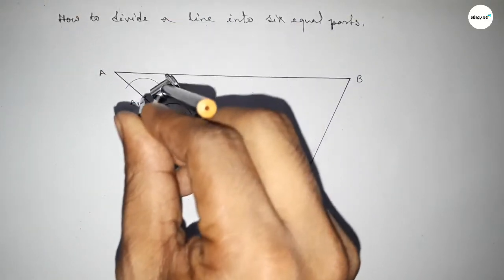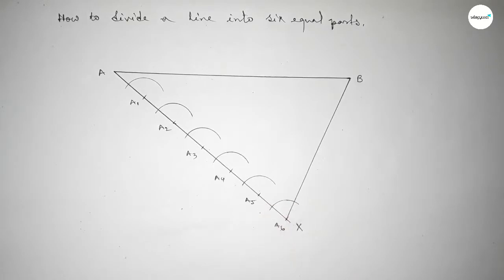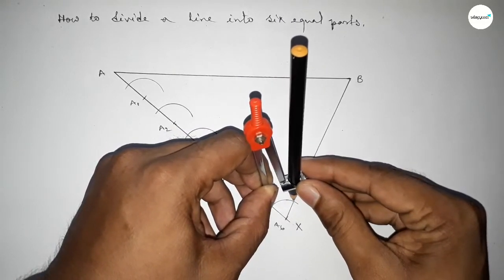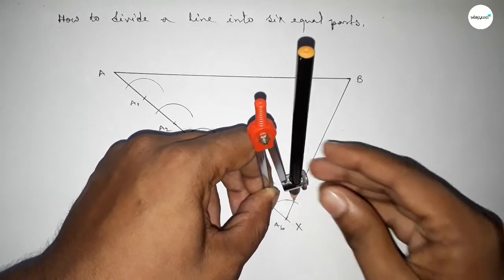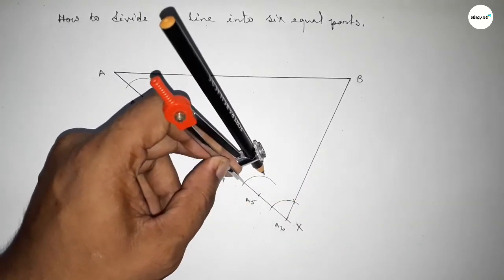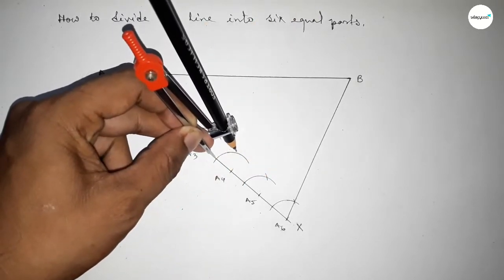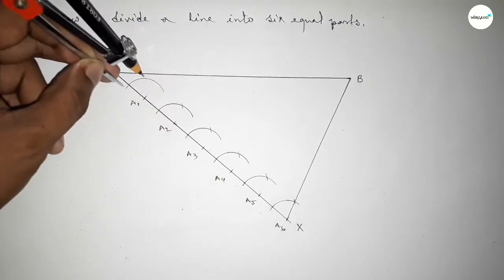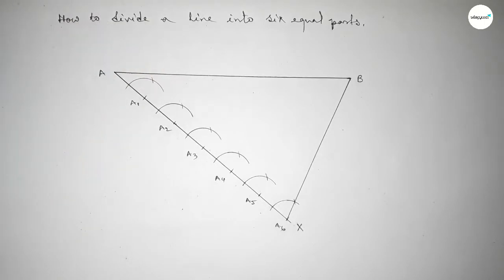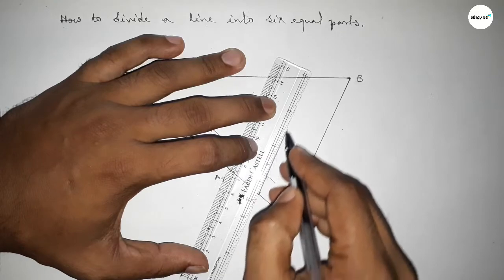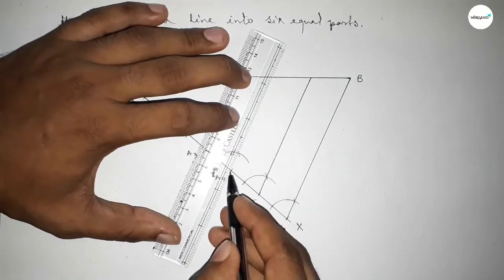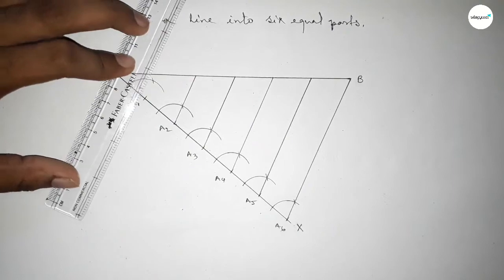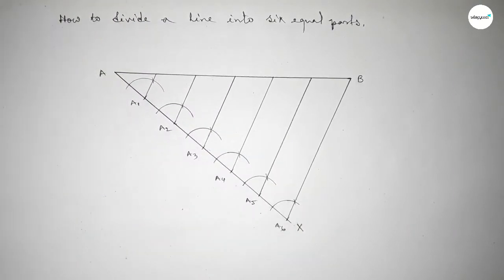Next, taking the length between the arcs and marking here. Putting the compass on point A5 and cutting the arc, then similarly on points A4, A3, A2, and A1. Now joining these lines, each of which is parallel to A6B. Similarly joining each line — all the lines are parallel to A6B.